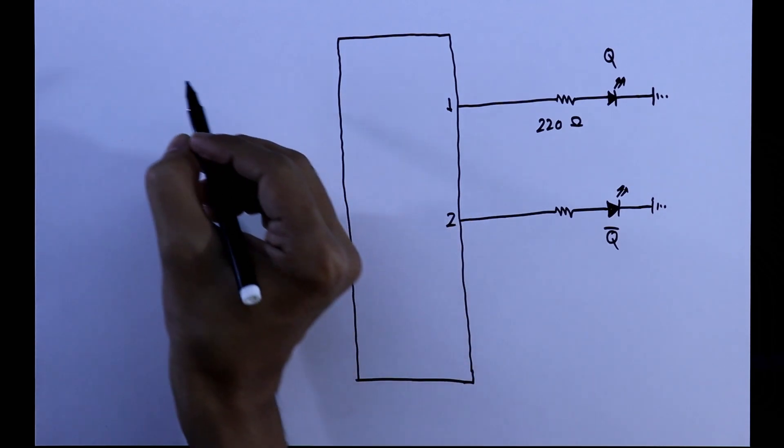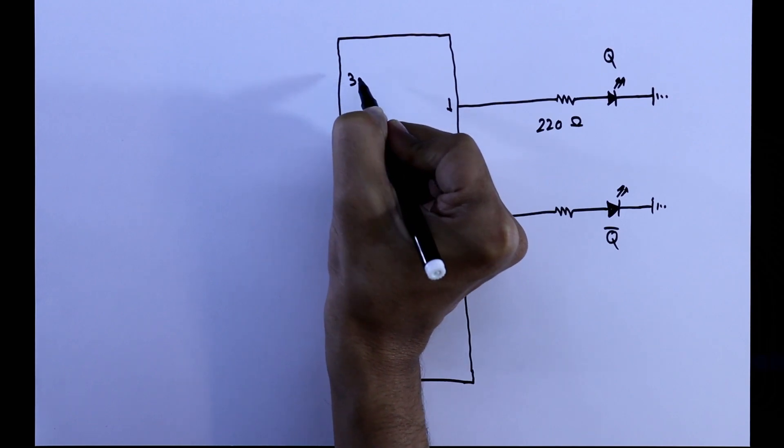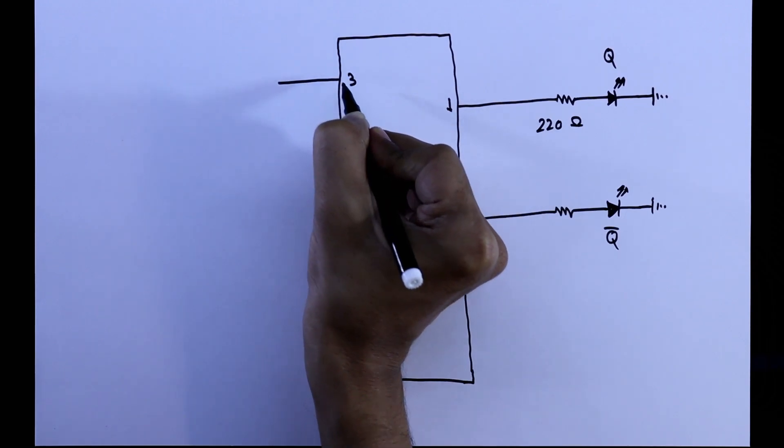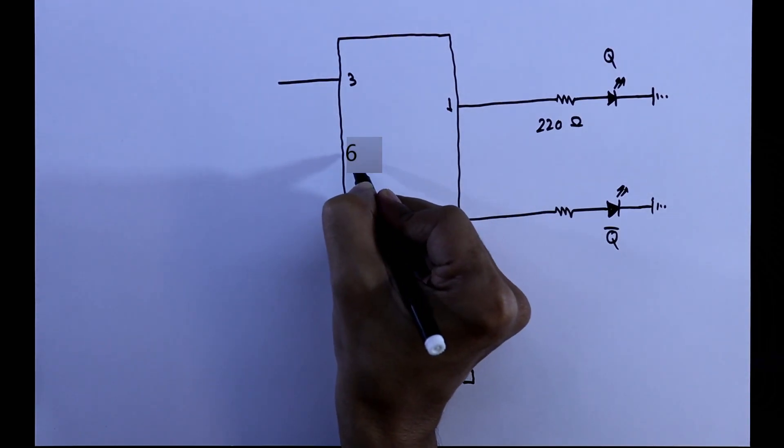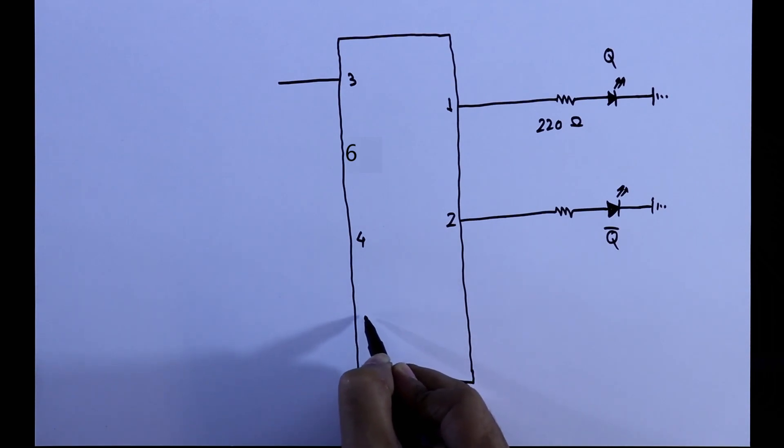And four inputs are: first input is our clock, so clock pin is pin 3, then set, set is pin 6, then reset, reset is pin 4, and data pin, it is pin 5.